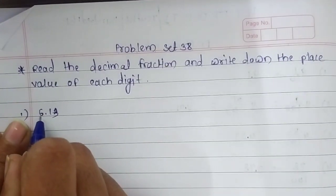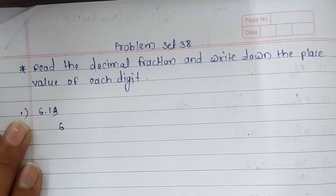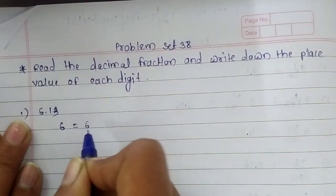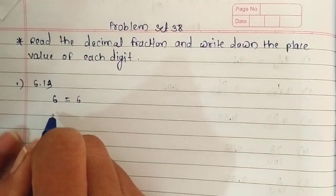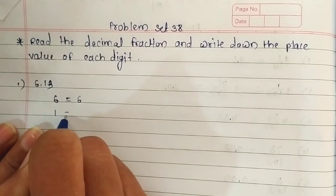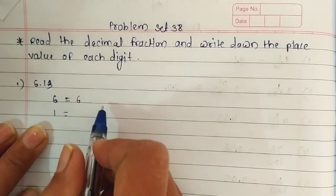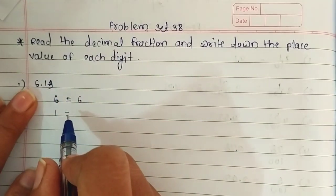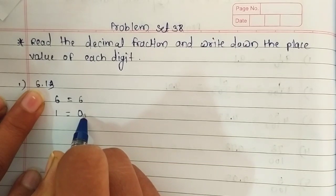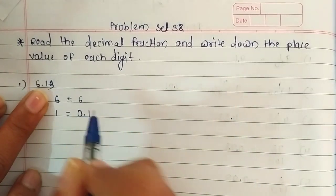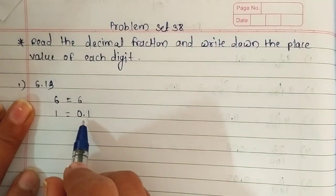So here 6 is in the unit place. The value of 6 is 6 because it is in the unit place. Now let's take the next number — it is 1. Each and every number after the decimal point is a fraction. So we are going to write the place value of 1: write 0 for 6, then give a decimal point and write 1. Its place value is 0.1.